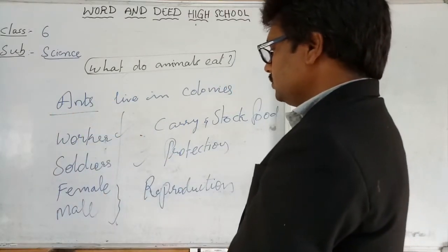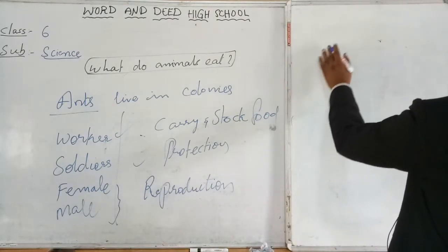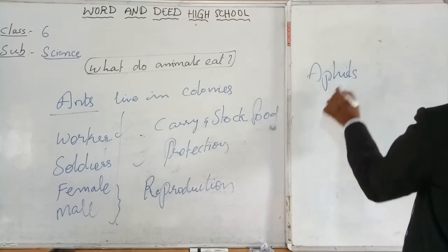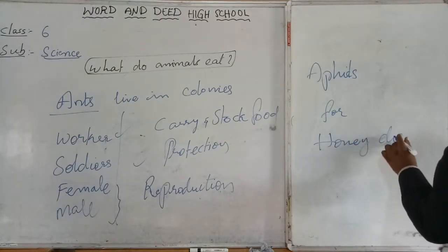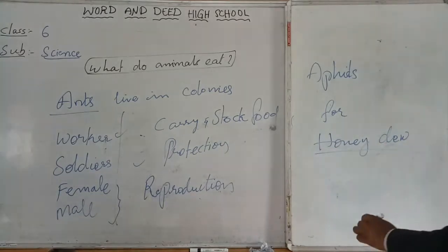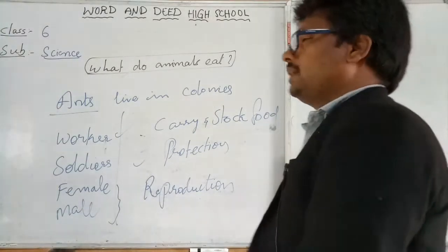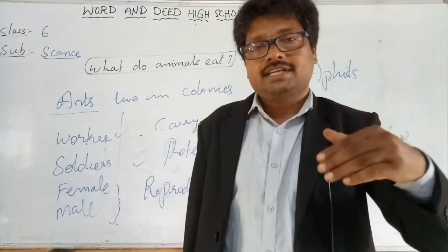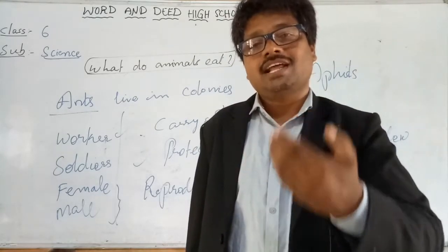Some species of ants keep other insects, like aphids, for honeydew. These are social insects that live in colonies. Some ants also help farmers. How do the ants help the farmers?